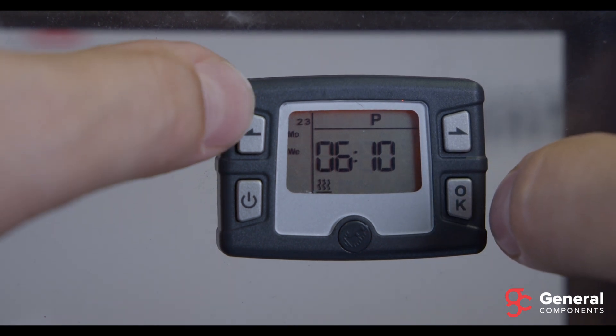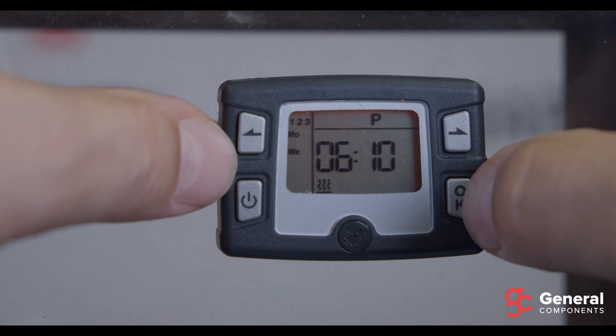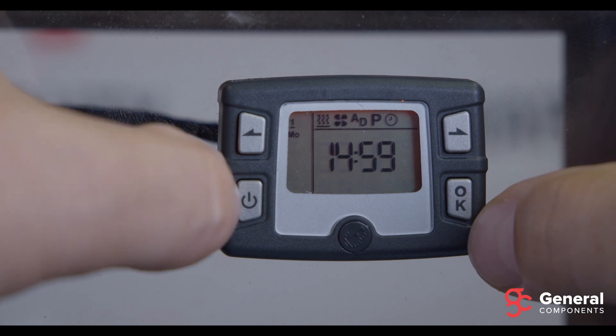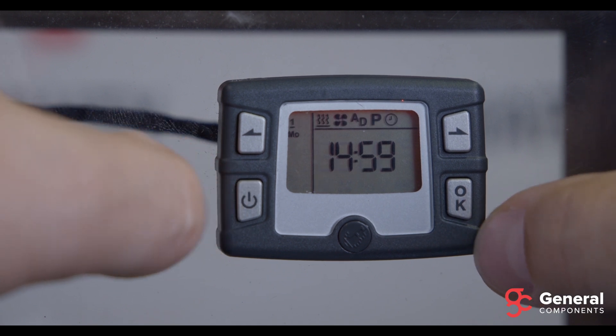If you go back into P, you will see it's blinking program number 1. Monday and Wednesday are set for 6:10 in the morning. To go back, press the power button, and you're back in the main menu.